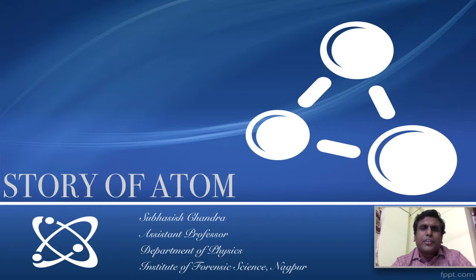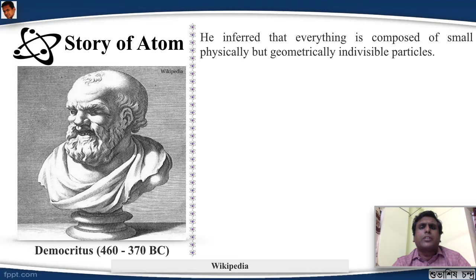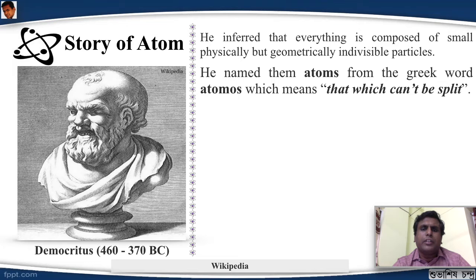The first man to say the word atom was this fellow Democritus. He was from ancient Greece and he said that everything is composed of small, physically but geometrically indivisible particles. He named them atoms from the Greek word atomos, which means that which can't be split.